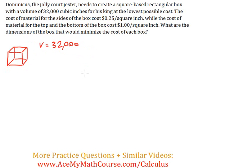The cost of material for the sides of the box is $0.25 per square inch, while the cost for the top and bottom is $1.00 per square inch. We want to find the dimensions that minimize the cost.